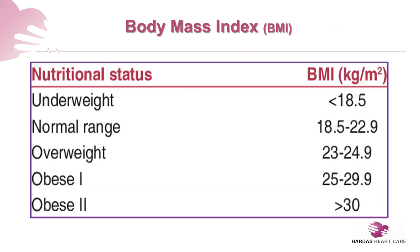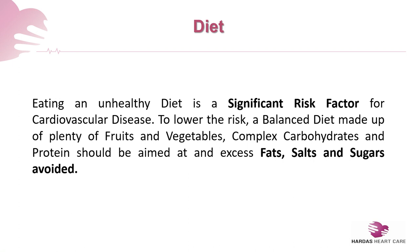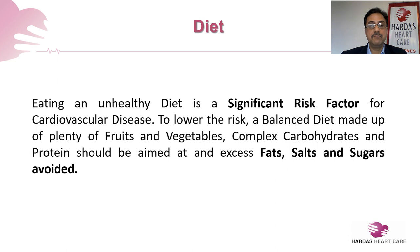Diet: eating an unhealthy diet is a significant risk factor for a variety of cardiovascular risks including diabetes and hypertension. A balanced diet made up of plenty of fruits, vegetables, sprouts, complex carbohydrates, avoiding simple sugars as far as possible, and good proteins will help you build a very good diet. Avoid excess fats and salt.